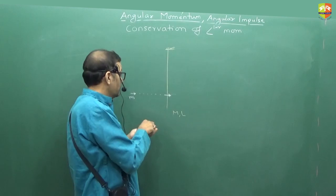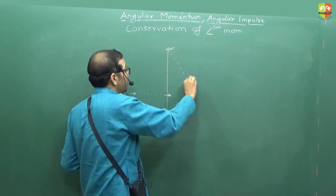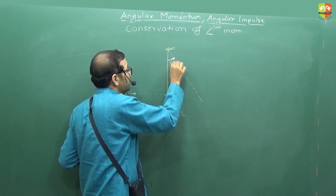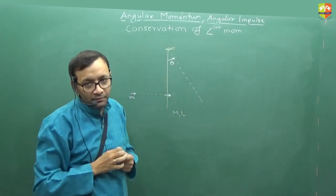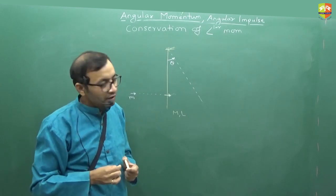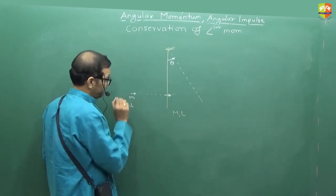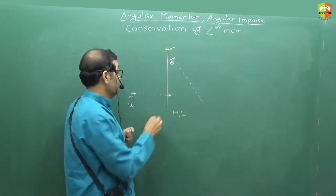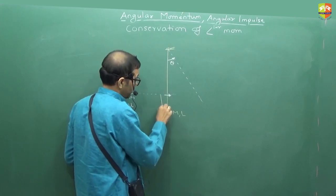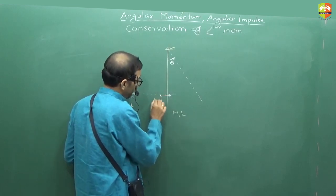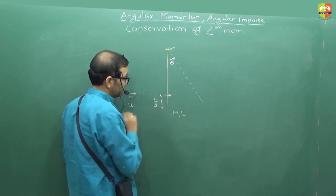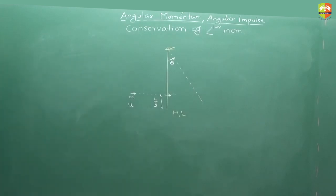This rod along with the bullet swings by an angle of theta max. It gets swung by an angle theta only. You need to find the velocity of the bullet. So where does it hit? This is L by 4. L by 5.